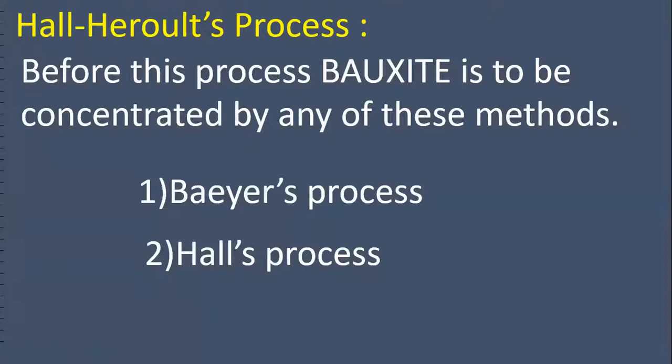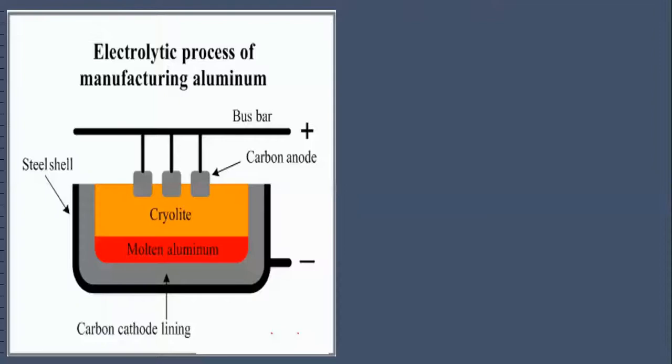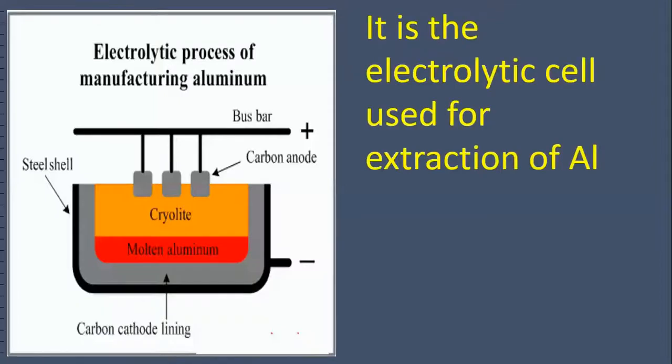Bauxite is changed into alumina. Now, by Baeyer's process, Hall's process, or Serpeck's process—adopt any type of process. Take this electrolytic cell for extraction of aluminum.